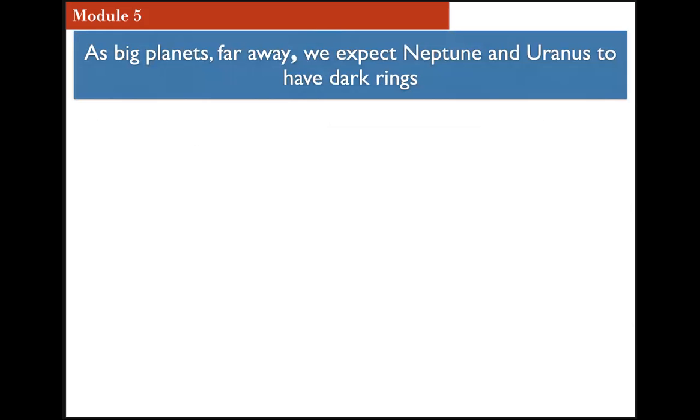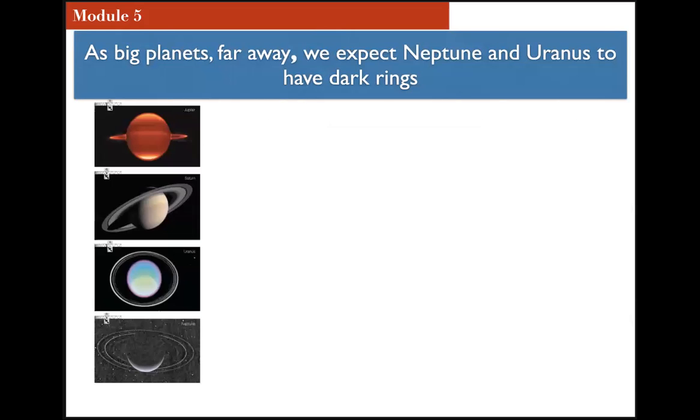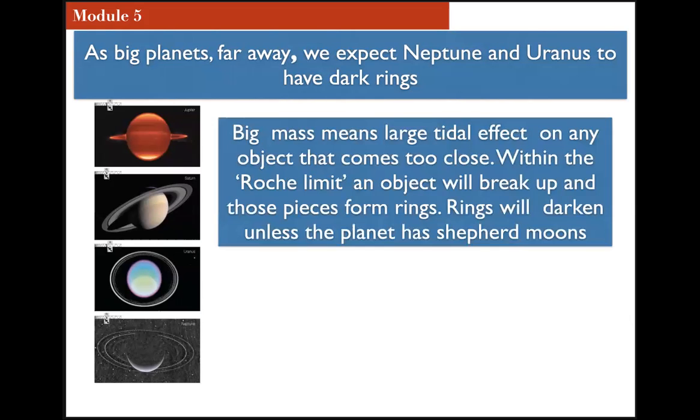Here's one thing we can do, right. As Uranus and Neptune are big planets that are far away, they should have rings. They should have dark rings. They do have dark rings. Uranus and Neptune have rings that are barely visible, at least nothing compared to Saturn's brightness. They're extremely dark. That's what we expect, right. These are big planets, which means they're going to cause big tidal stretching effect on any object that comes too close. And as the object comes within that Roche limit, it'll break up. The pieces will form small pieces that will form rings. Unless you've got shepherd moons, the rings will eventually darken and they'll eventually fall into the planet. And so we've got dark rings around Uranus and Neptune, just as we thought. OK, we don't need to learn now. That's exactly what we thought it should be.